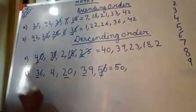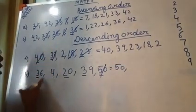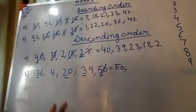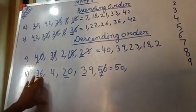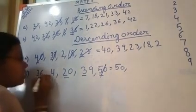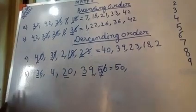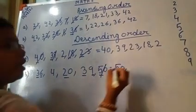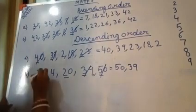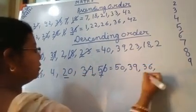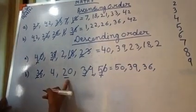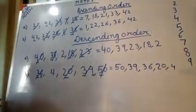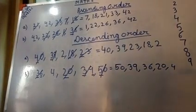After 50, counting back: 5, 4, 3. Here 3 comes two times — so children, there is a confusion. When 3 comes two times, we have to go to the ones place number. Here it is 6 and here it is 9. When counting from the back side, 9 will come first. So 39 is the next bigger number. After that 36. Then only two numbers left: 20 is two-digit and 4 is one-digit, so 20 is obviously the next bigger number. And 4 is written last.